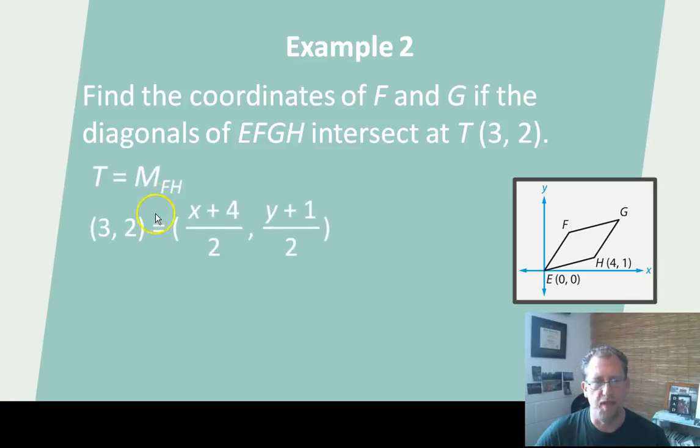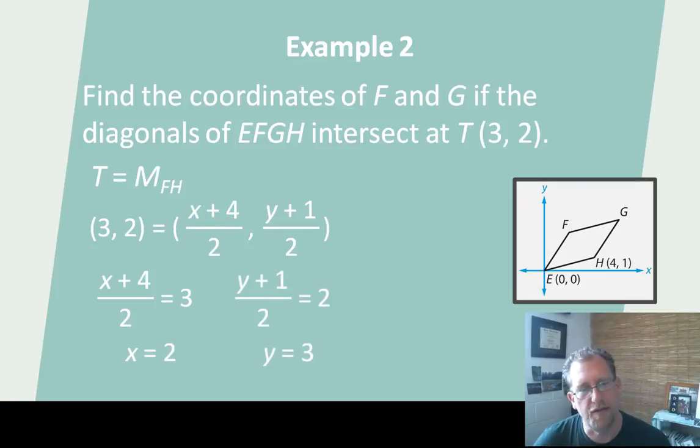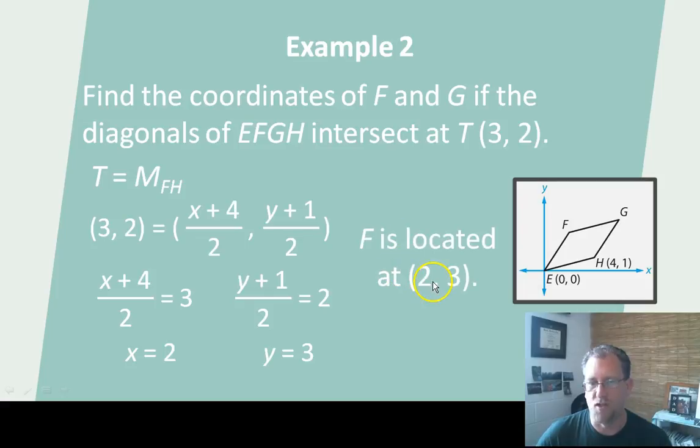So the midpoint of FH is T, 3, 2. And so here's the midpoint formula with what I know. One of the coordinates of the ends is 4, 1 here. And so I plug in 4, 1, and that's the other X and Y that I don't know. Here's the midpoint formula. I'm going to solve for X, and then I'm going to solve for Y. Not hard. It's just kind of an interesting thing to do. So the new coordinate, the other side of that segment would be at 2, 3. And so F is located at 2, 3.